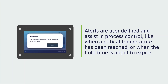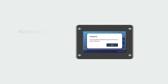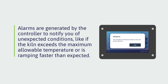Alerts are user-defined and assist in process control, like when a critical temperature has been reached or when the hold time is about to expire. Alarms are generated by the controller to notify of unexpected conditions, like exceeding the maximum allowable kiln temperature or the kiln ramping faster than expected.